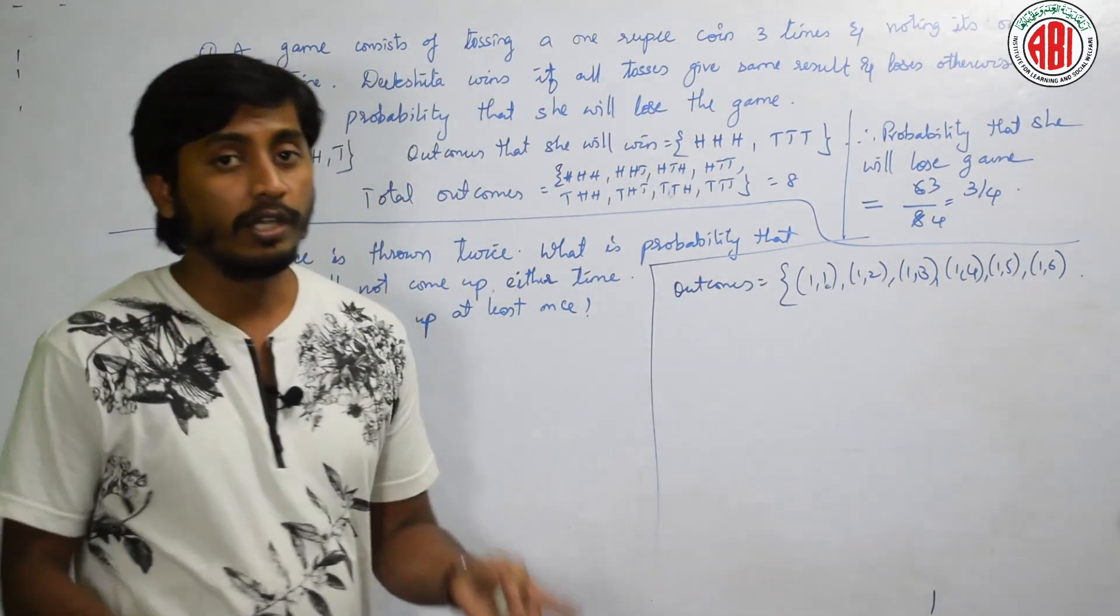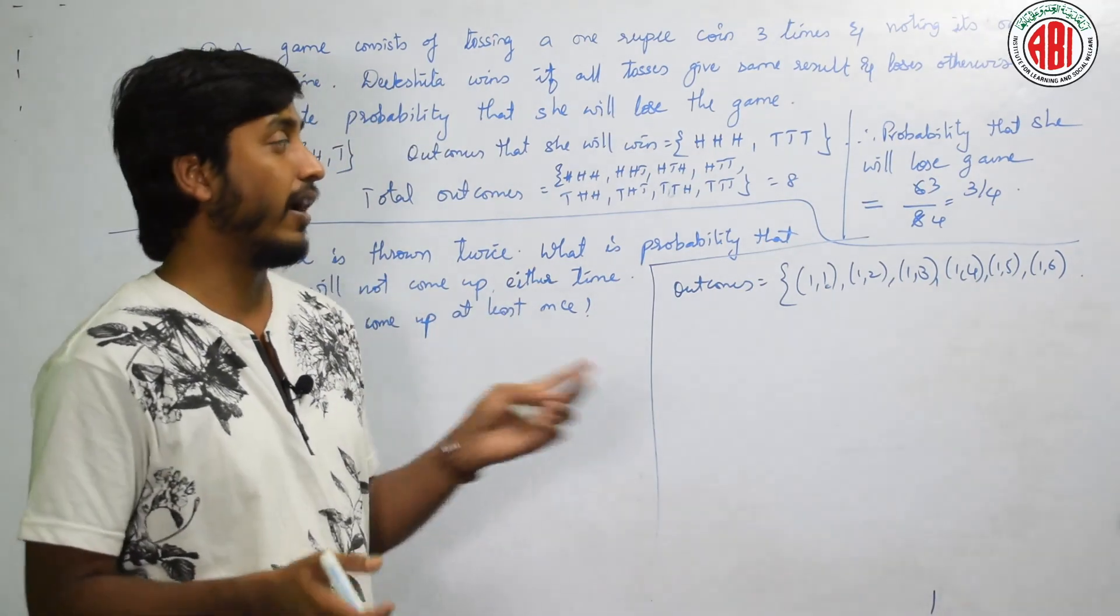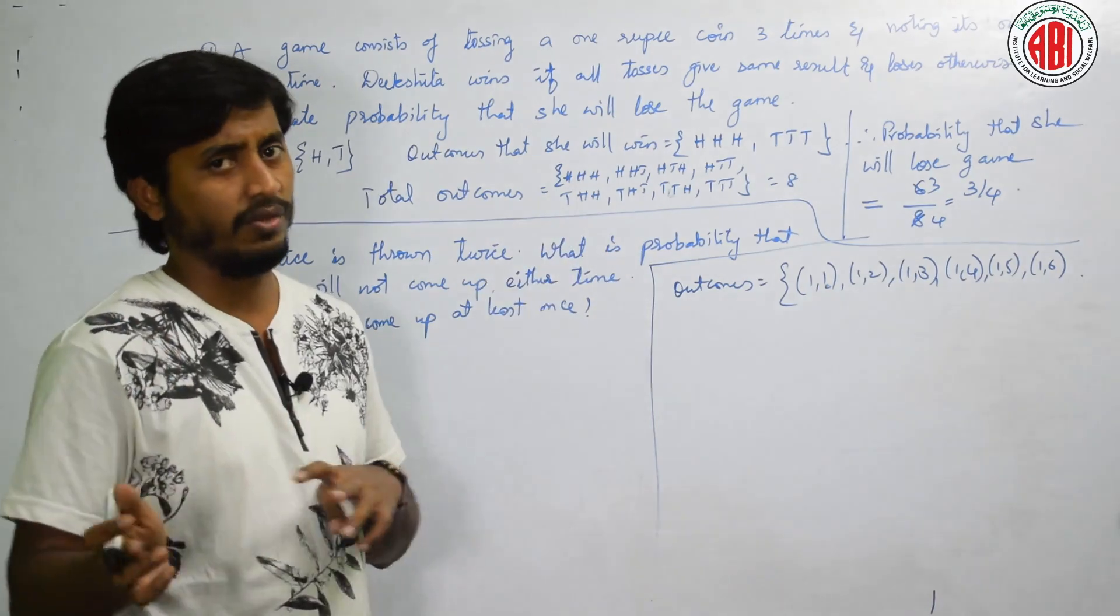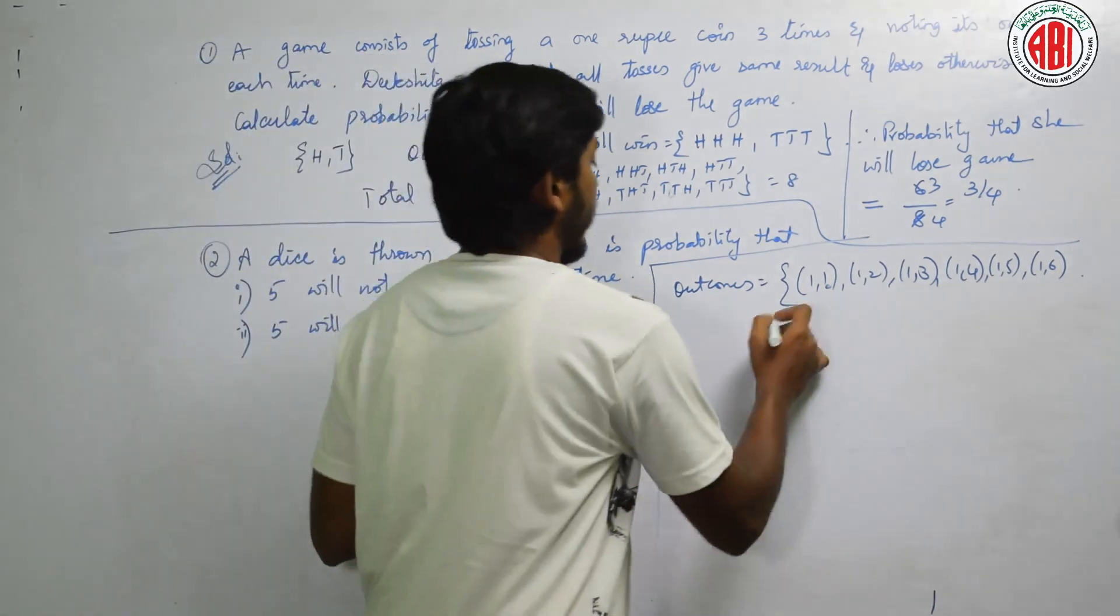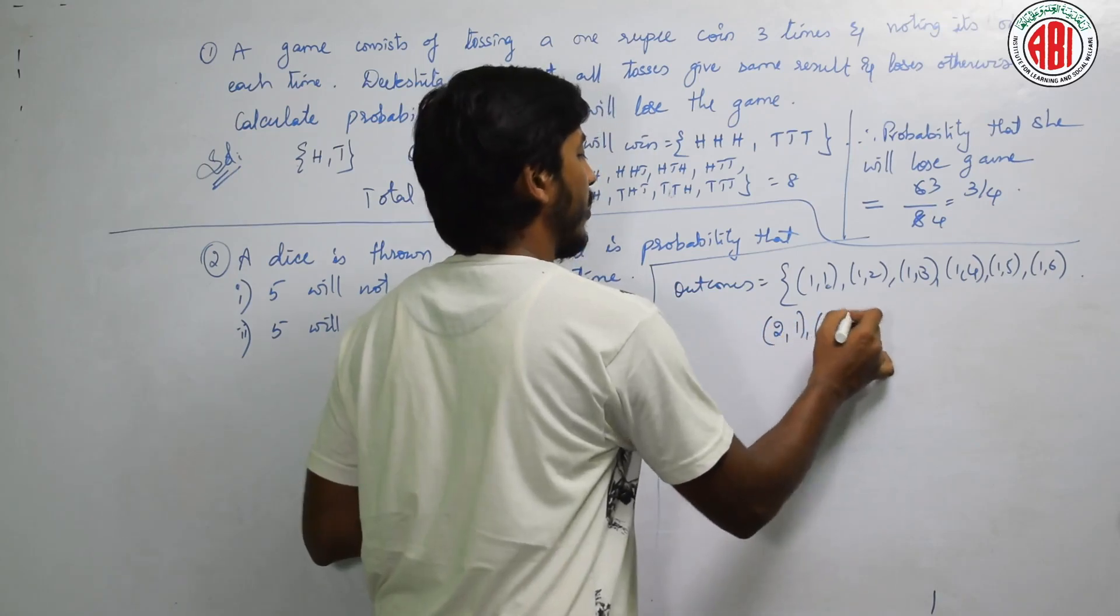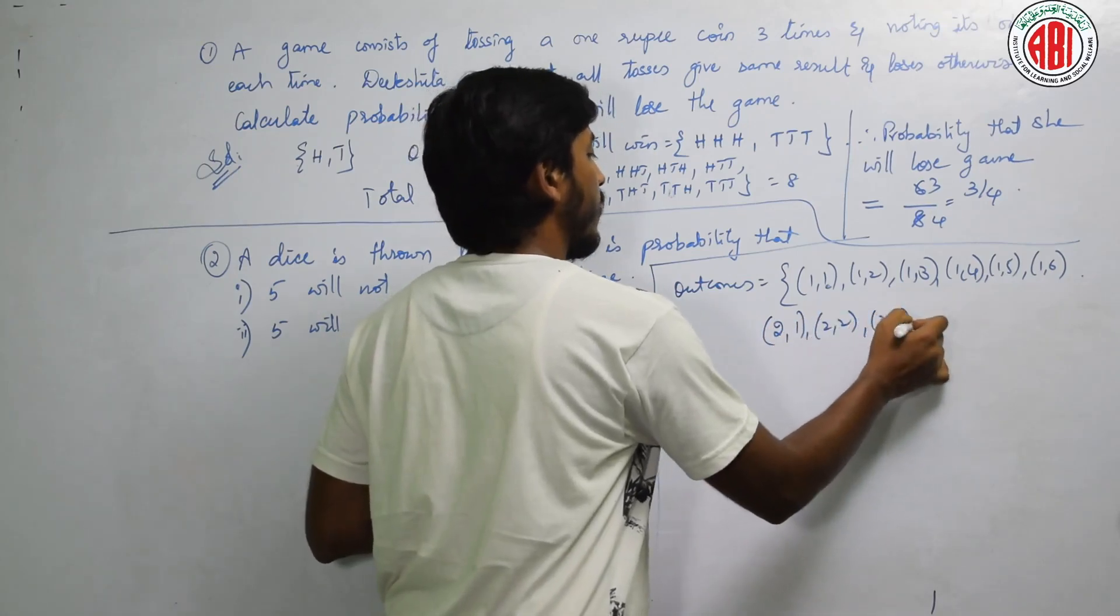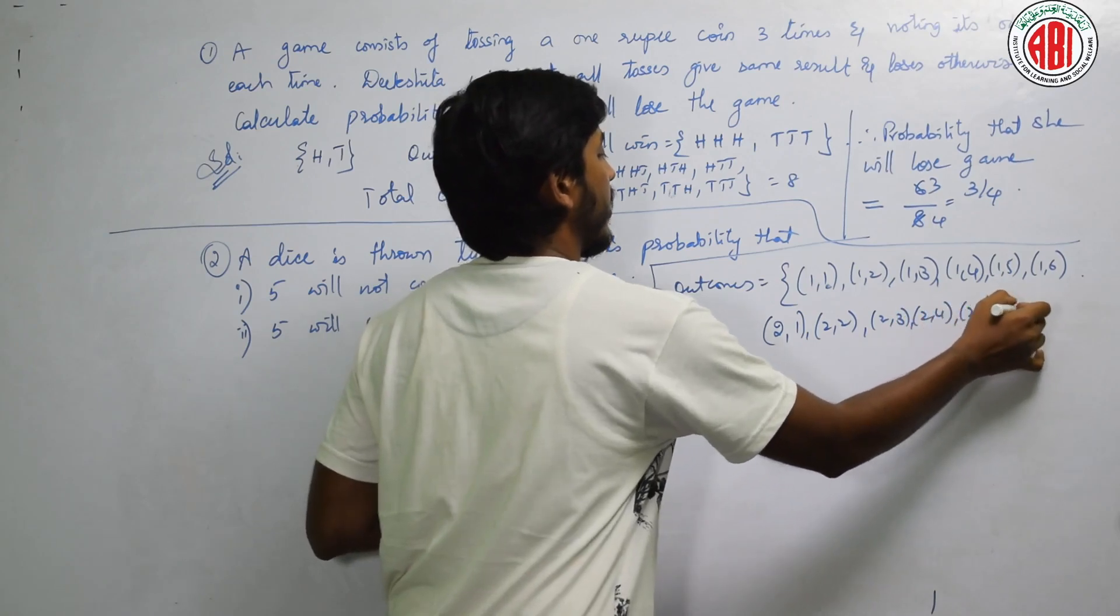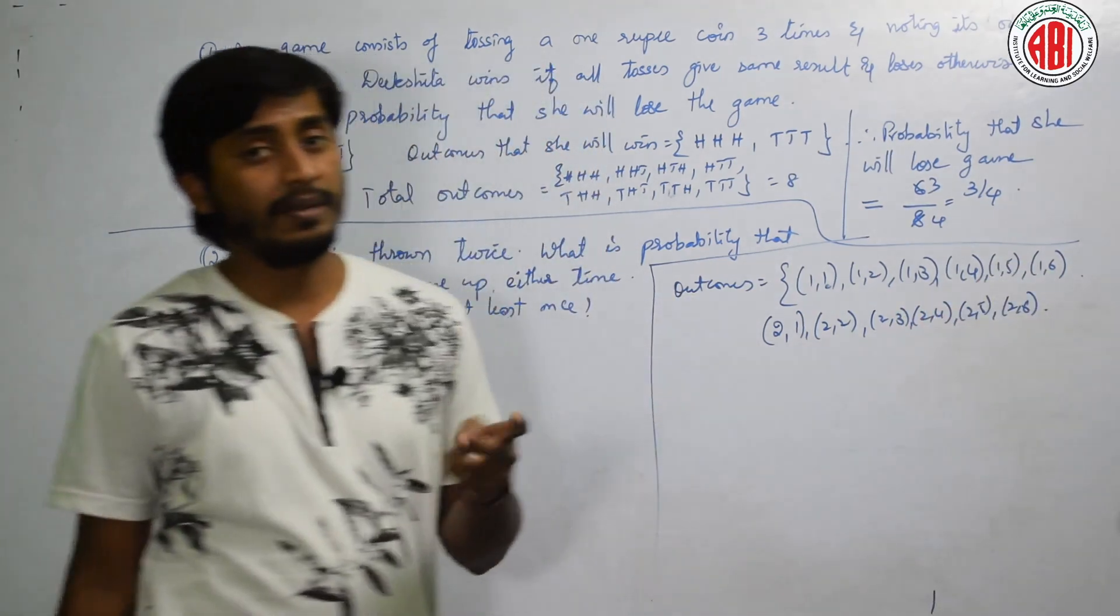If 1 dice gives an outcome of 1, 2 dice can be 1, 2, 3, 4, 5, 6, any of those 6. Next, if first die is 2, then second can be 1, 2, 3, 4, or 5, or 6.